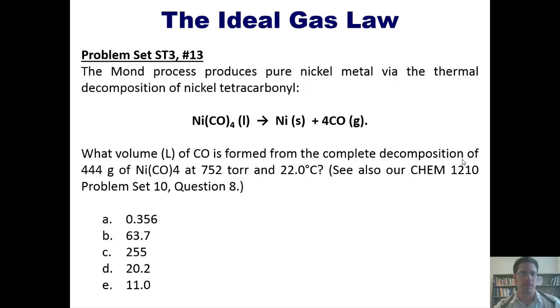Here's another question. The Mond process produces pure nickel metal via the thermal decomposition of nickel tetracarbonyl. What volume in liters of carbon monoxide is formed from the complete decomposition of 444 grams of nickel tetracarbonyl at 752 torr and 22 degrees Celsius? Now, this seems like a pretty challenging problem. I'm not going to answer this one for you here, but I will post a link here to a separate video in which I do that you're welcome to click after attempting to work it on your own to see how to do it.